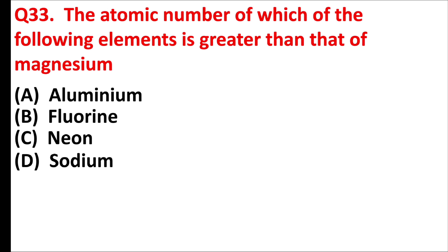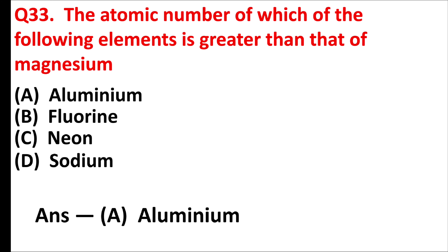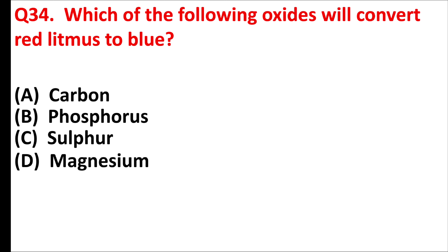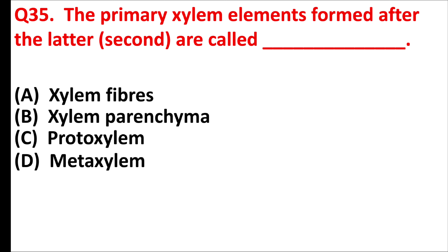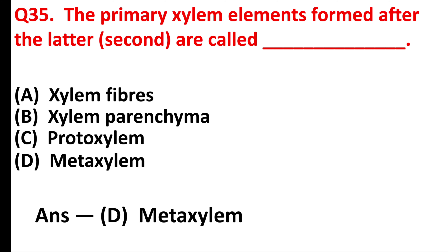The atomic number of which of the following elements is greater than that of magnesium? Which of the following oxides will convert red litmus to blue? Answer is option D: magnesium. The primary xylem elements formed after the protoxylem are called — answer is option D: metaxylem.